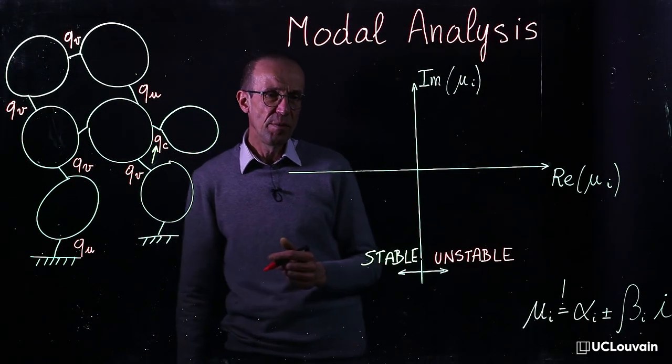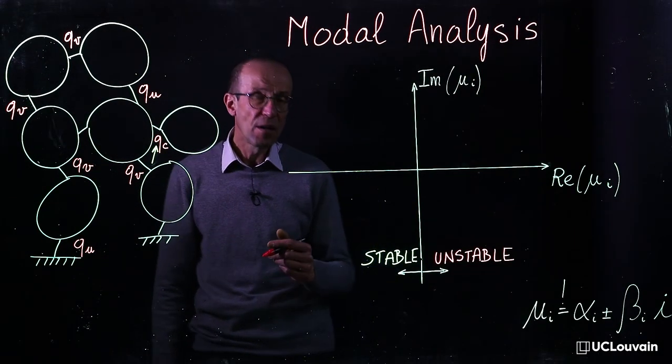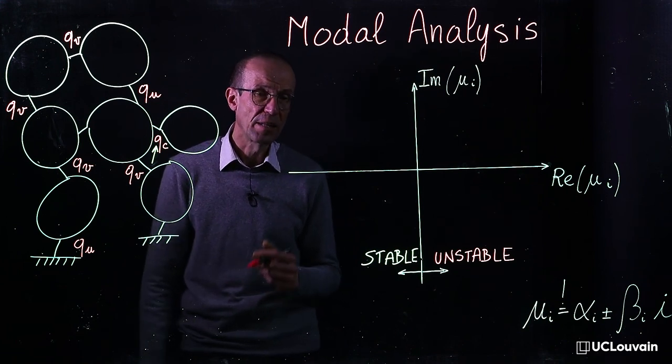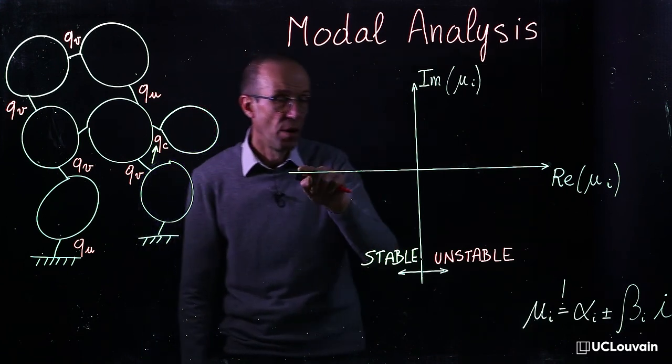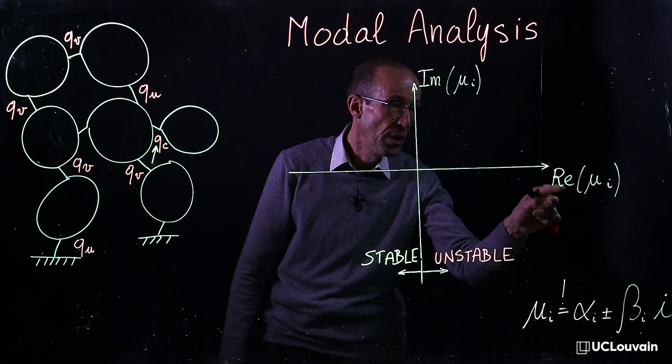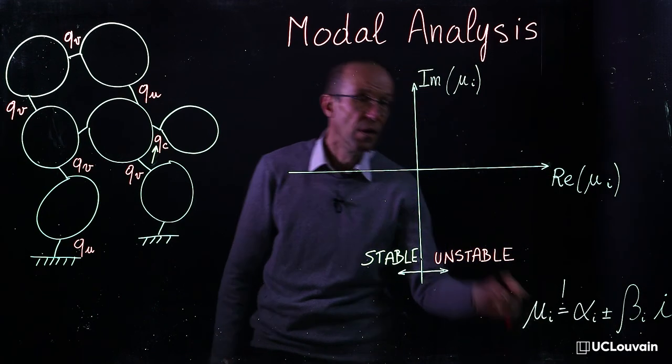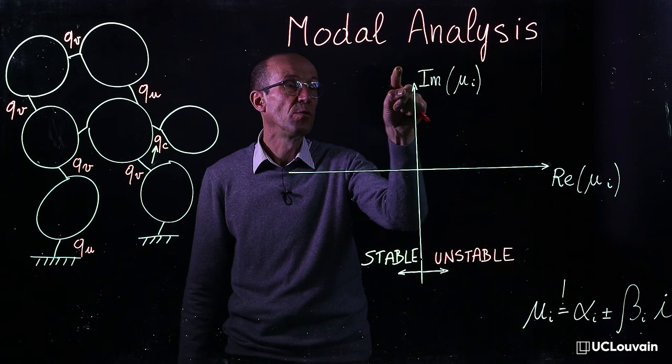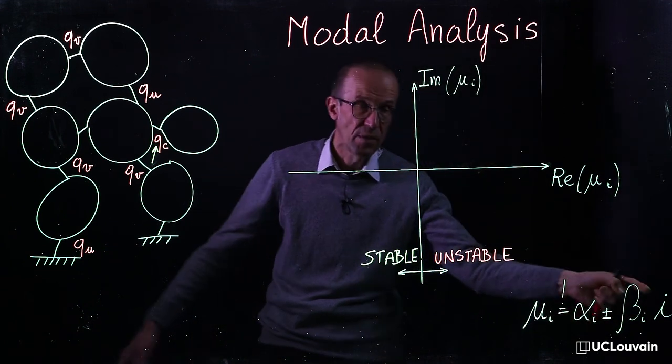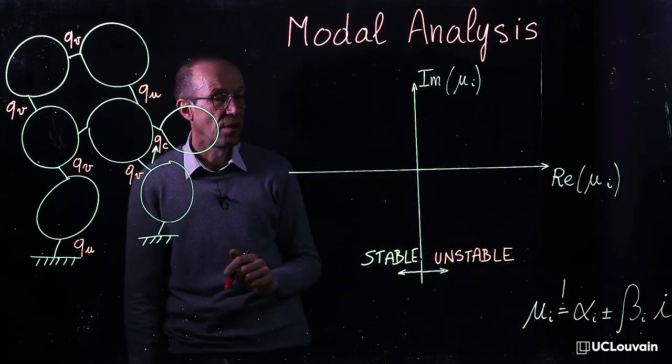The results can be summarized via the eigenvalue inspection in the complex plane, where the x-axis corresponds to the real part of an eigenvalue mu, and the y-axis corresponds to the imaginary part, if it exists, of the eigenvalue mu.